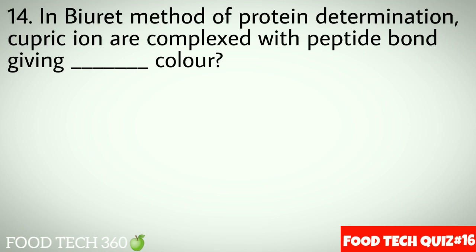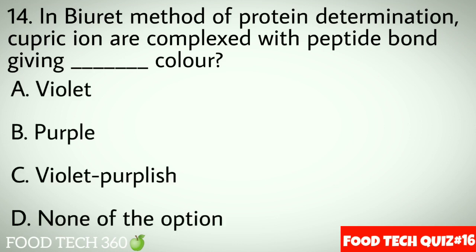Question No.14: In Barrett's method of protein determination, cupric ions are complex with peptide-bound giving dash color. Options A: Violet. B: Purple. C: Violet purplish. (Answer not provided in transcript.)